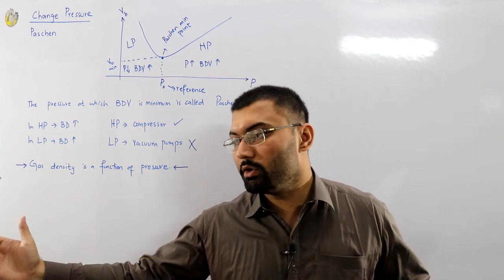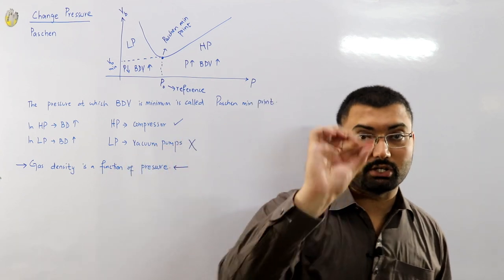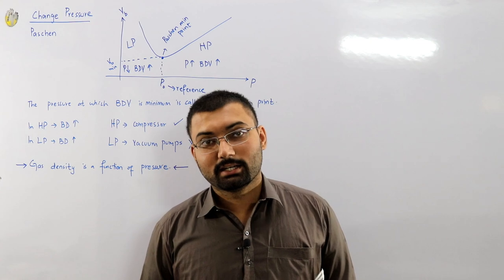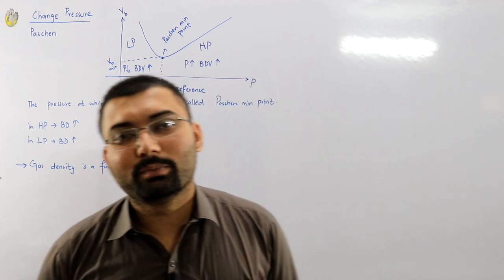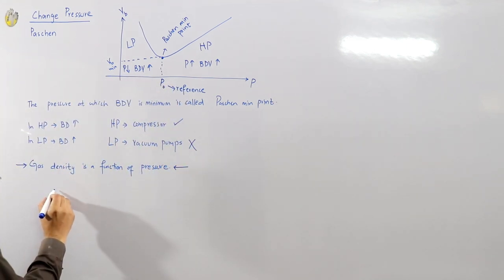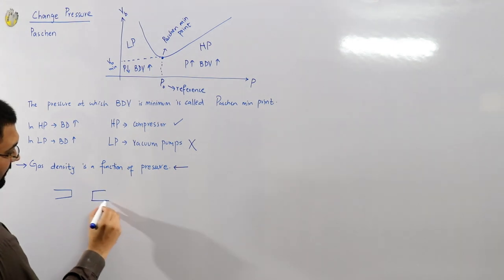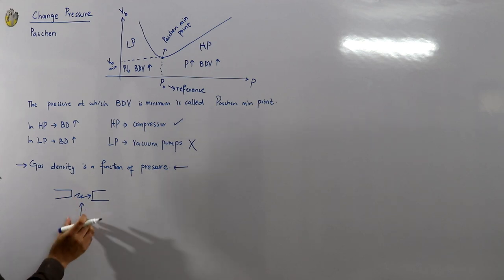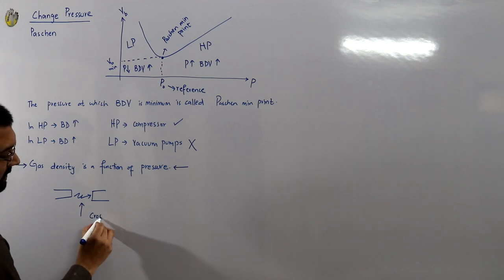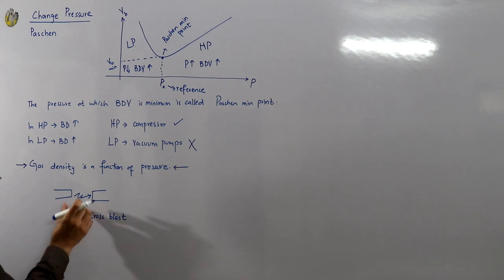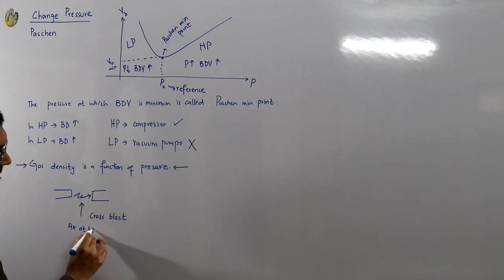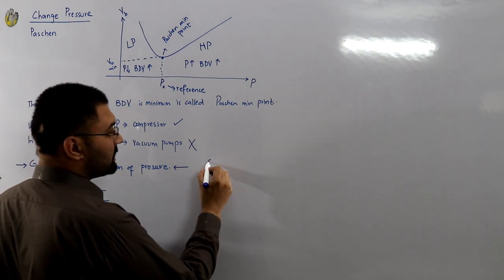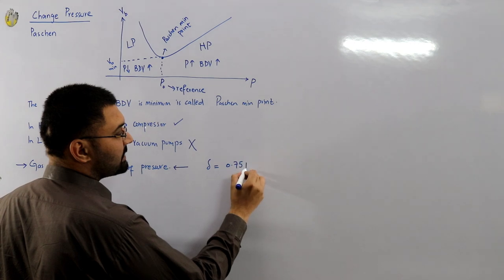When the contacts are moved to a certain distance the arc finishes, but we don't know when that will happen. So why not use air? Air is used at high pressure to blow off the arc. As soon as the contacts of the circuit breaker open and an arc forms between them, you give it air at high pressure in the form of a cross blast, and this extinguishes the arc.